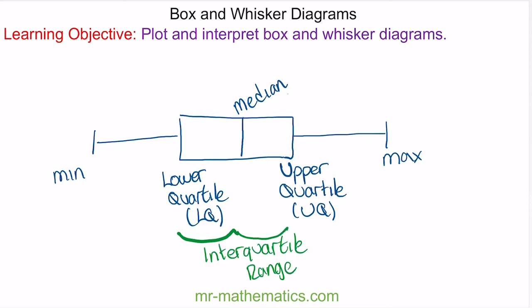What the interquartile range does is illustrate the middle 50% of data. It eliminates the first 25% in one whisker and 25% in the other, so it shows us the most useful set of data in our results.